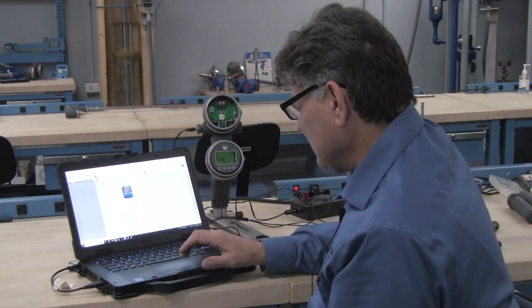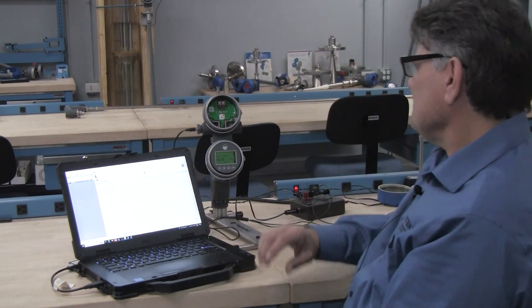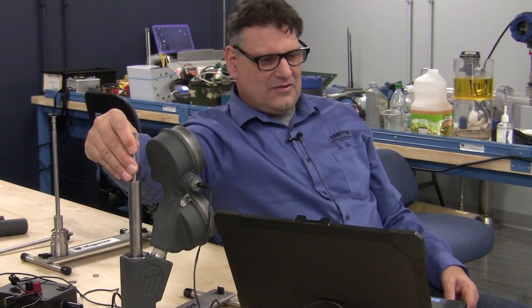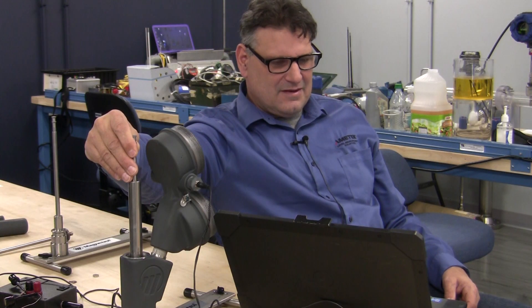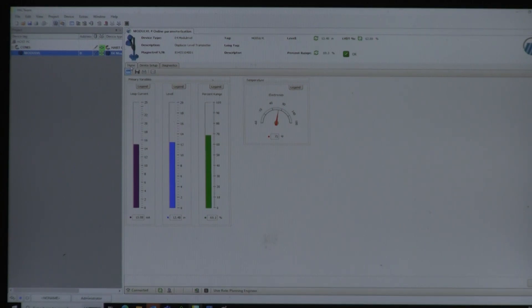I have now set this up where it will track the LVDT movement. So I'm slowly moving the LVDT down, which is simulating a lower level. And you can see on my screen, the transmitter is responding to that. And then likewise, I'll just lift it back up a little bit and you'll see it respond.